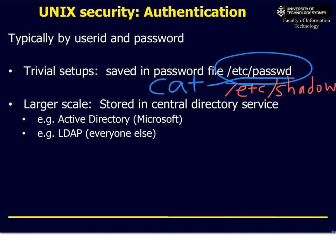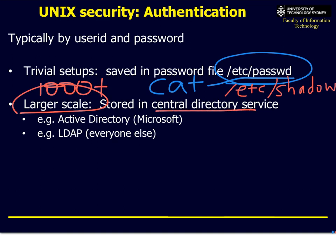The biggest problem is that /etc/shadow is only a flat file — like a plain text file. So how do you deal with thousands of users? For larger scale — typically hundreds or thousands of users — we store them in a database called a directory service. Microsoft has one called Active Directory, and everybody else uses one called LDAP. Active Directory actually does contain LDAP as well as Microsoft-specific features.